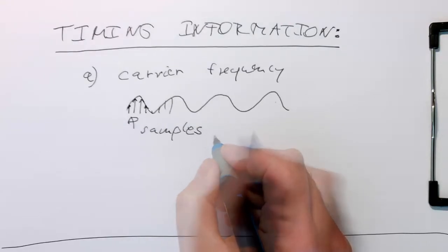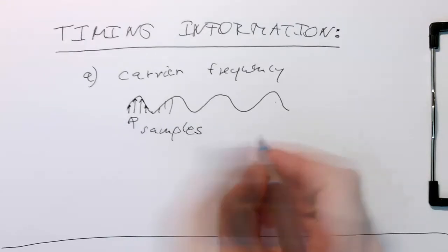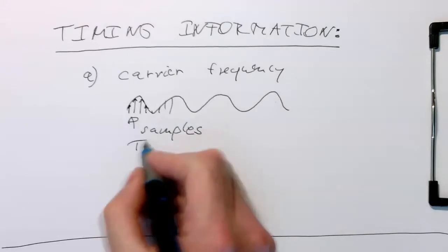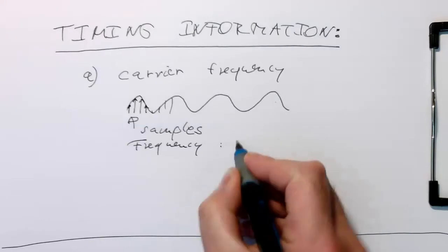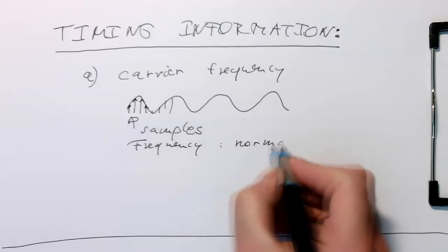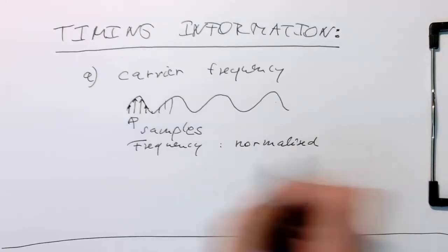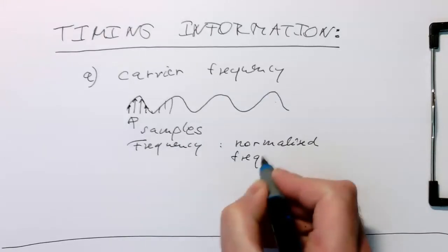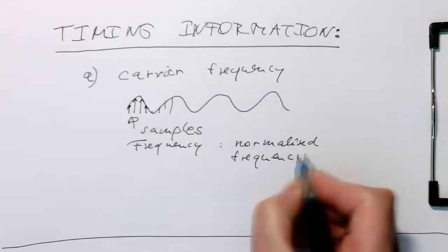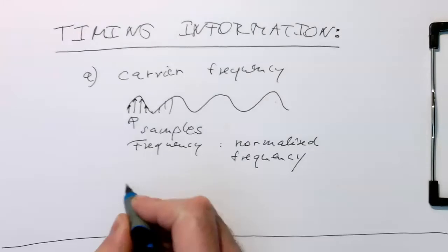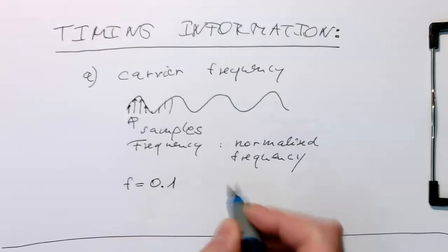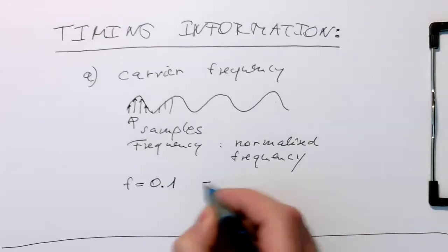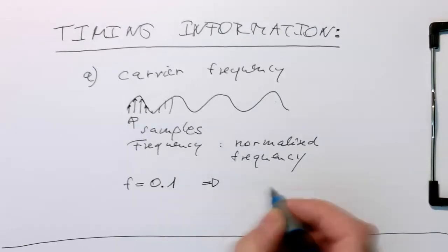This is very easy. The frequency is the so-called normalized frequency. For example, f of 0.1 means that one period of the sine wave is ten samples long.